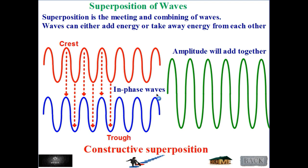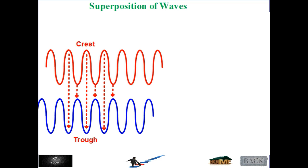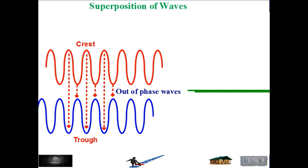Since the two waves are in-phase — crest on the same crest, trough on trough — the amplitude will add together. If a wave intersects with another wave where the crest is at a trough and the trough is at a crest, then these two waves are out of phase or anti-phase. Thus, we subtract the amplitude of these waves and we get a minimum amplitude, or zero amplitude if the amplitudes of each wave are equal.